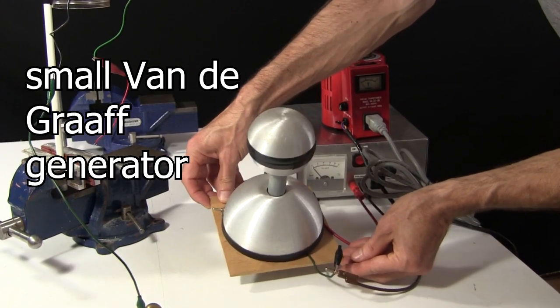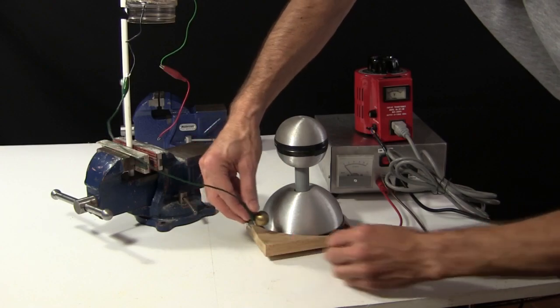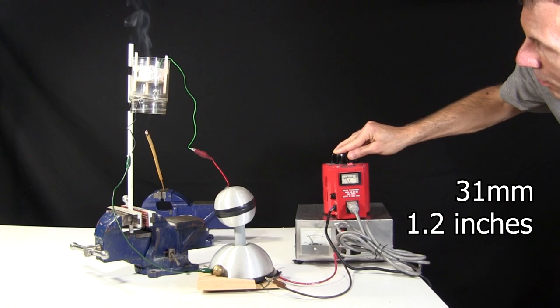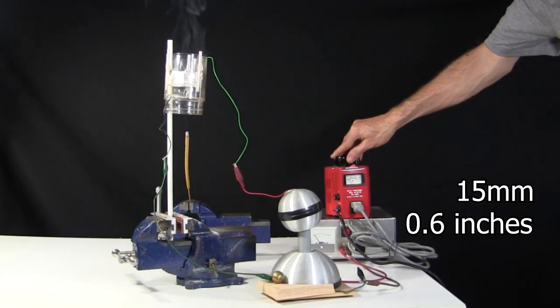I bring out my small, commercially made Van de Graaff, that gives longer sparks than my homemade one. I connect the bottom dome to the mesh, and the top dome to the foil cylinder. But it has no noticeable effect. And here it is again with the cross in the foil cylinder. Also no good.